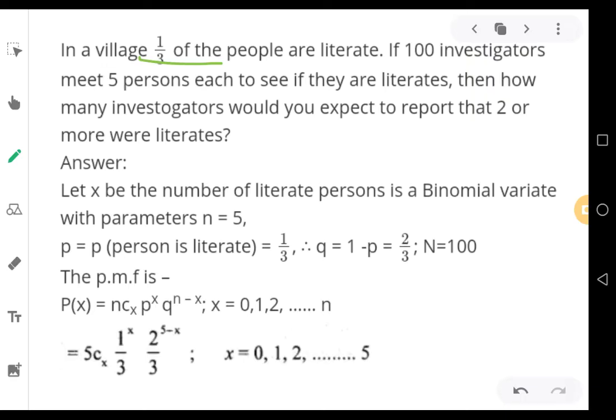So what is happening? 100 investigators, they are choosing randomly 5 people each. Each investigator is selecting a sample. The size of the sample is 5 here. So the number of people chosen to be selected in the sample randomly, that becomes your n, small n. So the small n is 5 here.